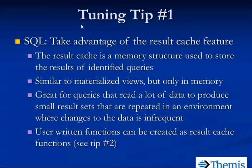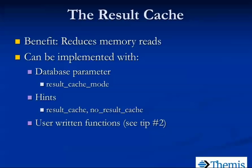What we're trying to do is reduce memory reads for queries that read a lot of data but produce a small result set — like aggregate functions: average, count, max, min. The main benefit is reducing memory reads. We're already assuming raw data is in memory in the buffer cache, but what if instead of accessing 10 million records to get the average price, I only had to read one record from the result cache? Reading one record is obviously faster than reading a million records.